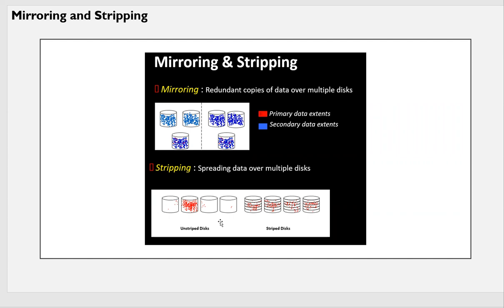Suppose you have four disks and you have not striped your data. Even though you have four disks, all data is residing on disk two — making it a hot disk — while the other three are cold disks with no IO. There are so many IOs on disk two that it may get corrupted very soon, because too many IOs will cause poor performance. Whereas the other three disks are almost idle, with no data, and will last much longer.